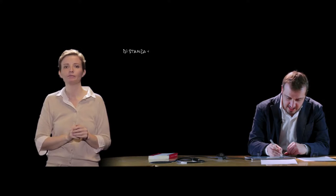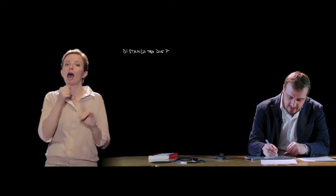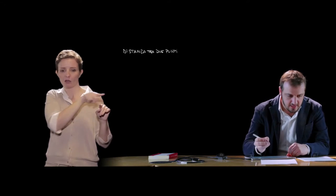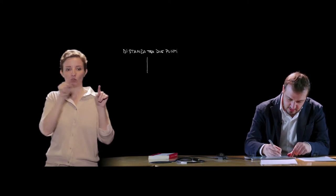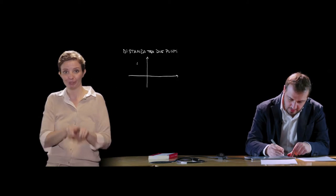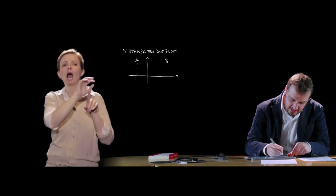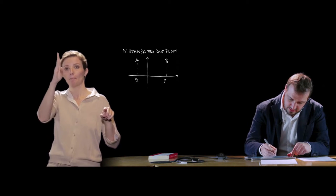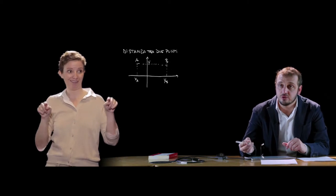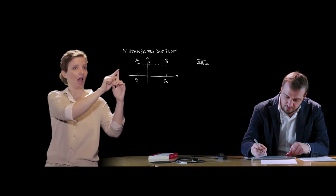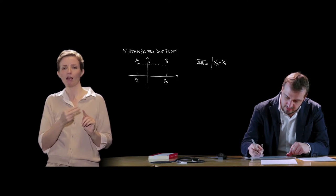Andiamo a valutare alcune caratteristiche importanti che si introducono nel piano cartesiano, in particolare le formule che riguardano la distanza tra due punti. Per la distanza tra due punti è necessario differenziare il modo in cui questi sono allineati nel piano. Se i due punti hanno la stessa ordinata, quindi giacciono su una retta orizzontale, come il punto A di ascissa xA e il punto B di ascissa xB con la medesima ordinata y, la distanza AB è la differenza in valore assoluto delle ascisse dei due punti.